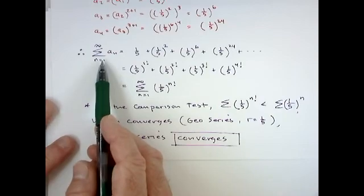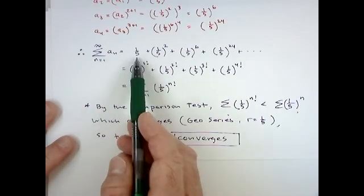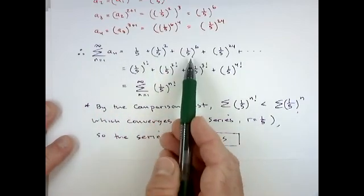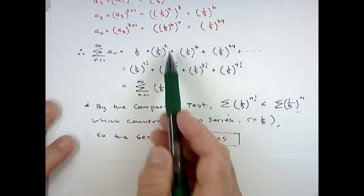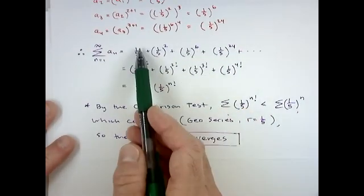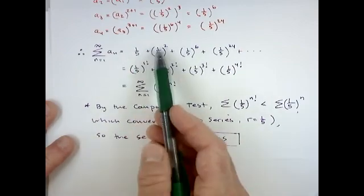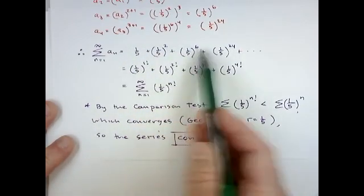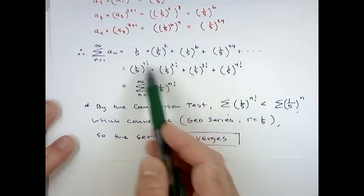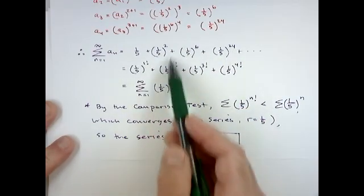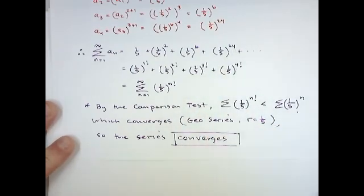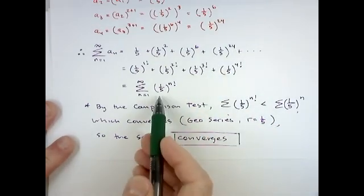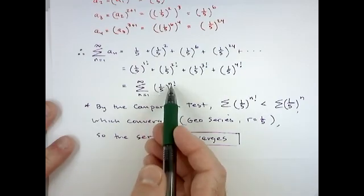And if you now write out the series, what we're basically talking about is a series that goes one fifth plus one fifth squared plus one fifth to the sixth, one fifth to the 24th. Now those numbers, probably good to know in 21c in a series. One, two, six, 24. Those are factorials. One fifth to the one factorial, two factorial, six is three factorial, 24 is four factorial. So this series is really the series of one fifth to the n factorial.